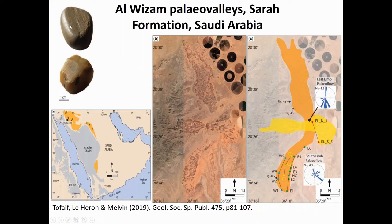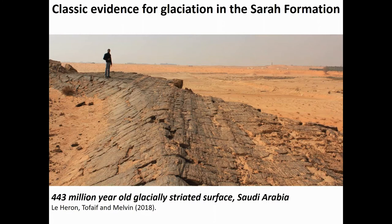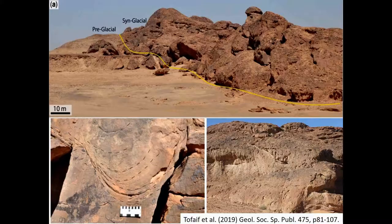Here's Saeed standing on one of these amazing striated surfaces, which we published as a chapter in a book on Earth's ancient ice ages earlier this year. This evidence is widespread around the Arabian Shield. When you look at these paleo valleys, it's really easy to convince yourself that there is something there to observe — it's not just a fantasy interpretation.